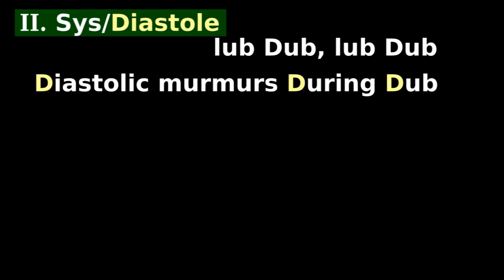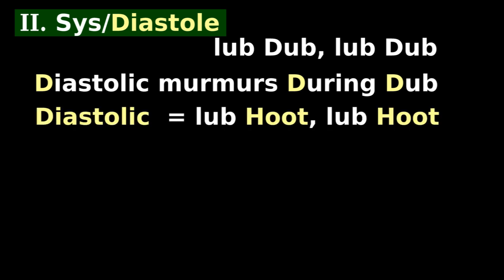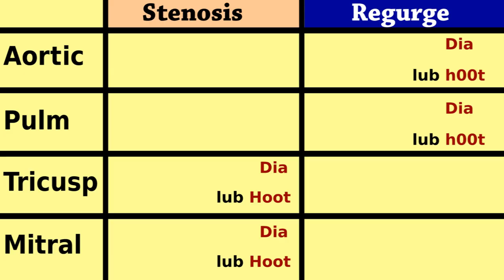Normal heartbeat is lub-dub, lub-dub. Diastolic murmurs happen during dub, so diastolic murmurs sound like lub-chut, lub-chut. If you hear lub-chut, these are your choices.